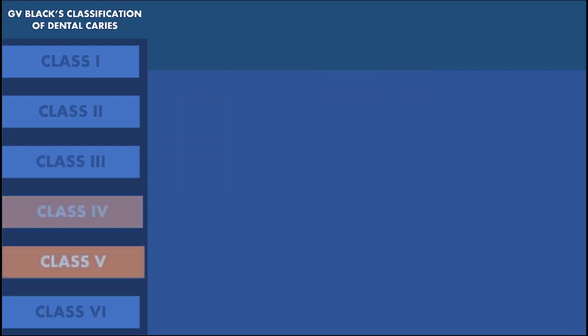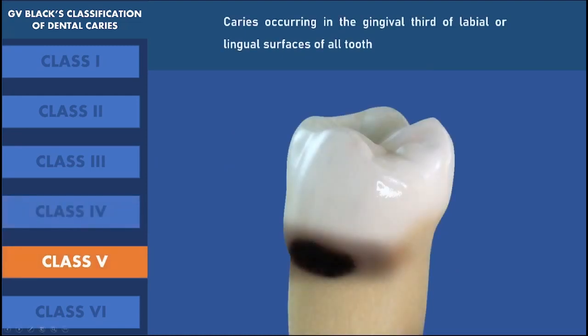Class 5 dental caries is the caries which occurs in the gingival third of the labial or the lingual surface of all teeth — that is, it can occur in the labial and the lingual aspect from central incisor to third molar. Whenever there is a caries in the gingival third of the labial or the lingual aspect, then it is classified as class 5. But if there is a caries in the gingival one-third of the proximal aspect of a tooth, then it can be class 2 for a posterior tooth or class 3 or class 4 for an anterior tooth.